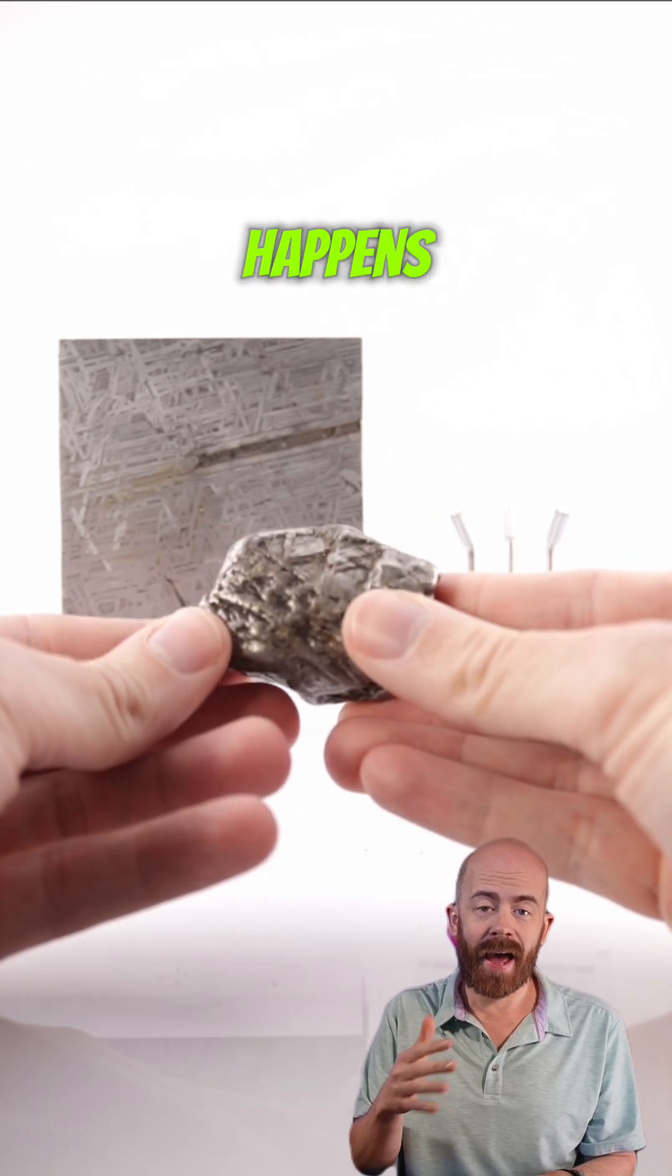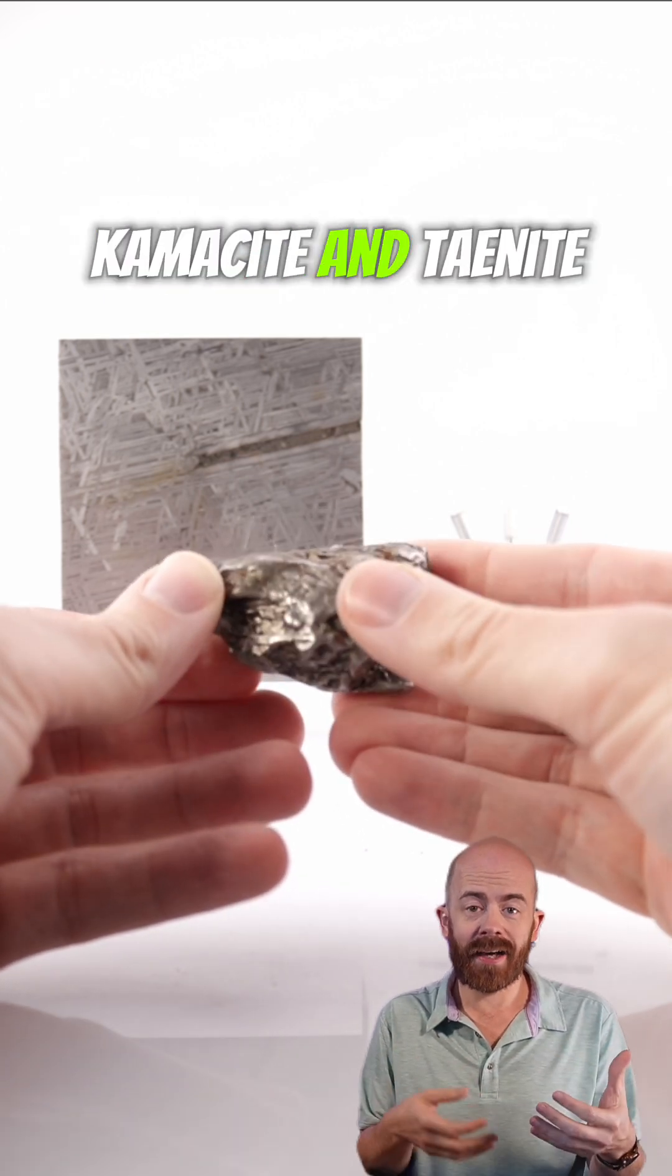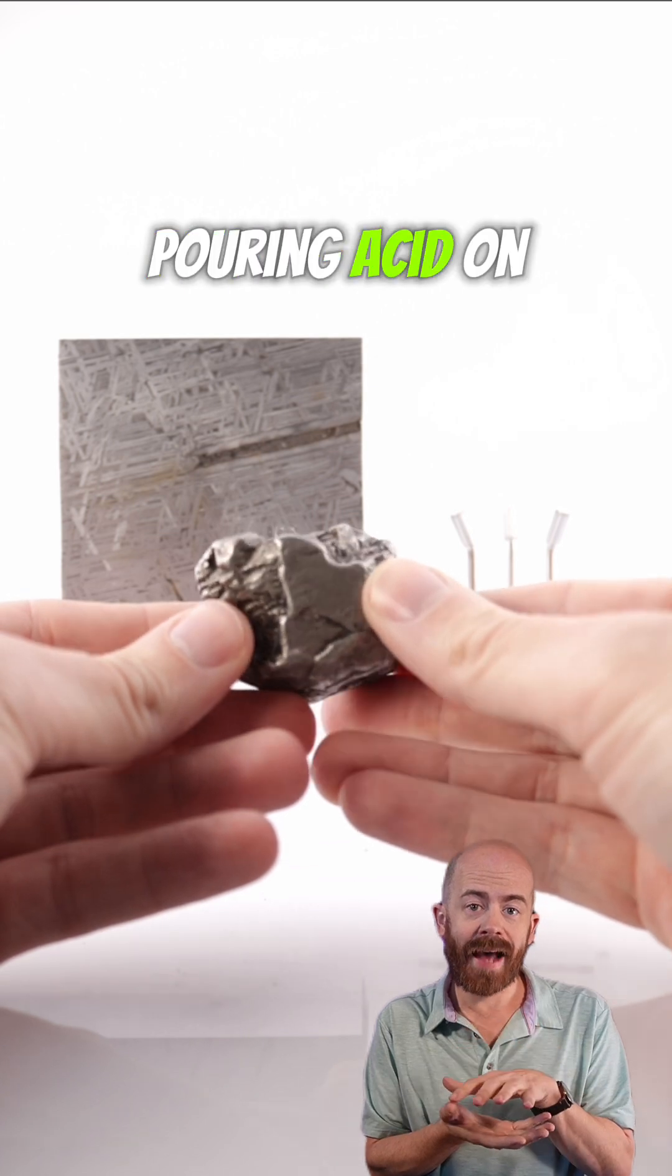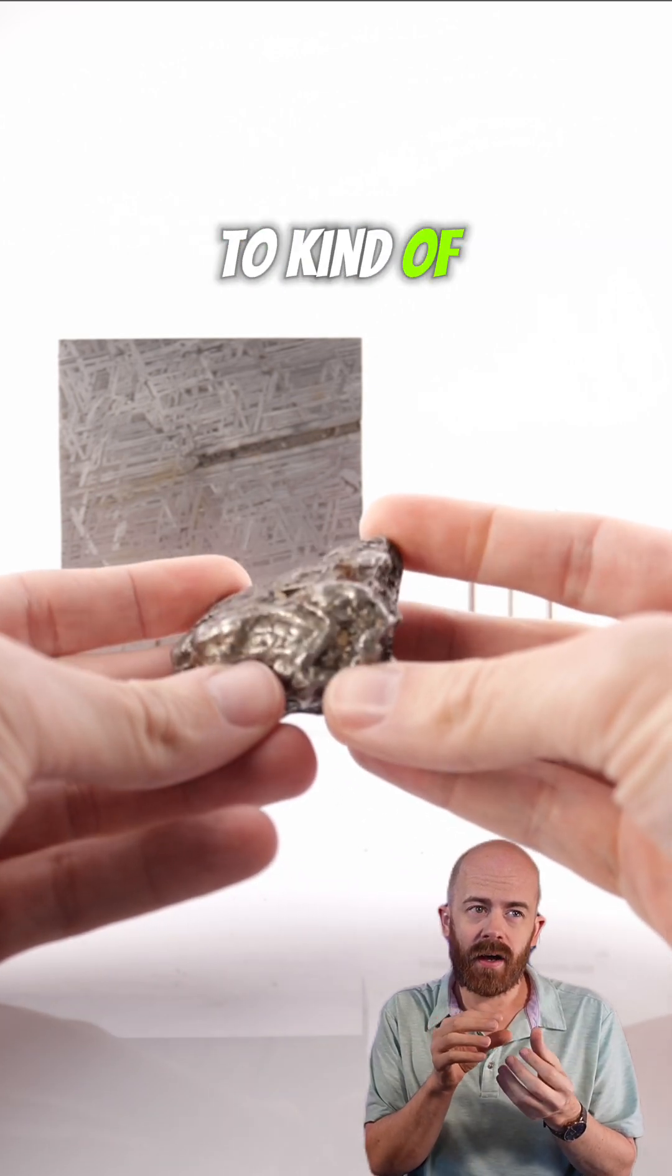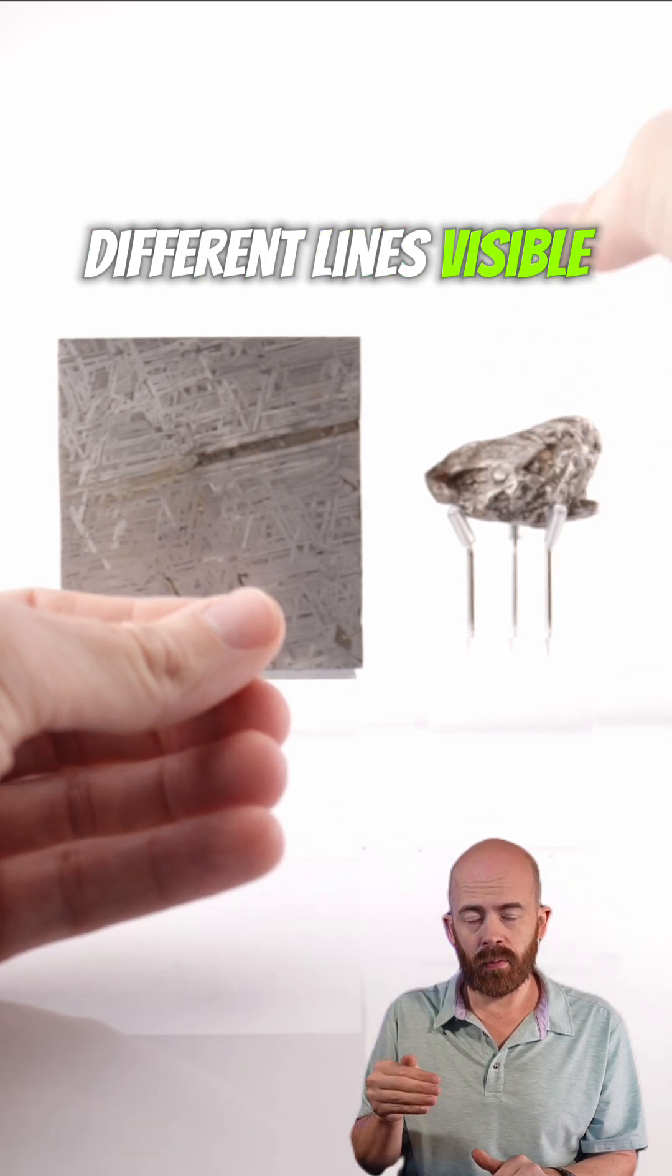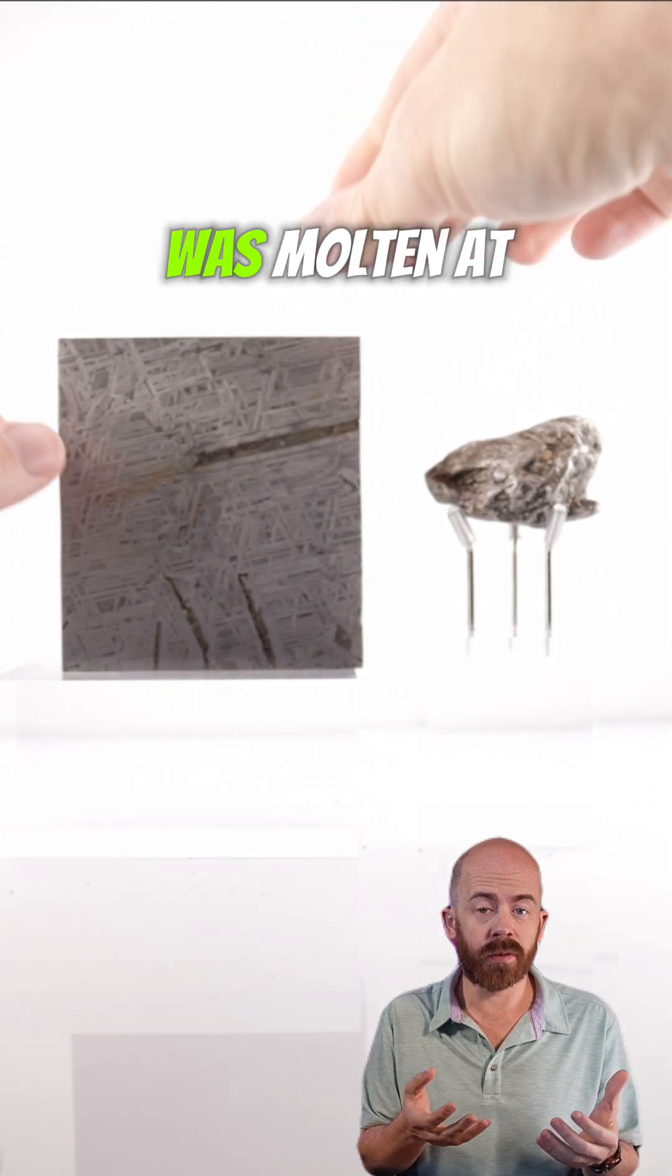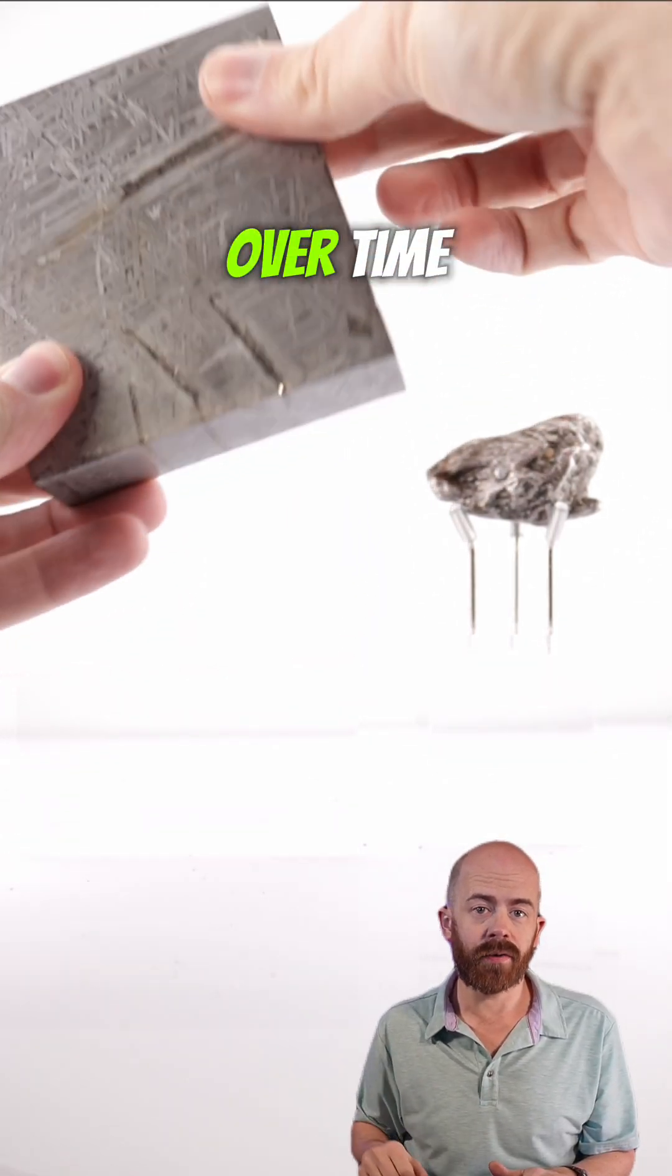That Widmanstätten pattern happens because the iron-nickel meteorite has two different alloys in it, kamacite and taenite. And when you etch that by pouring acid on it, it causes them to wear away at different rates, which makes the different lines visible. We're essentially looking at iron-nickel crystals because this material was molten at some point and cooled slowly over time.